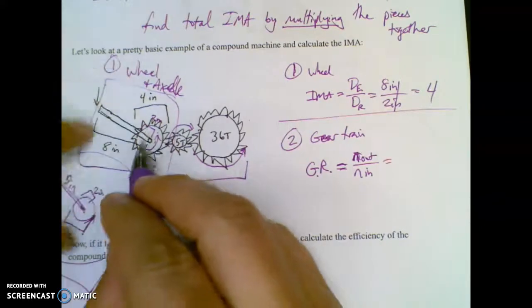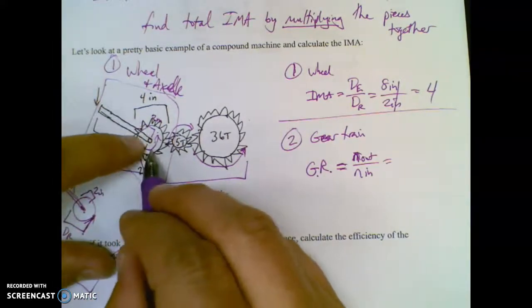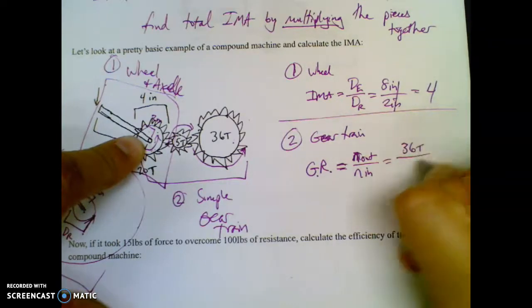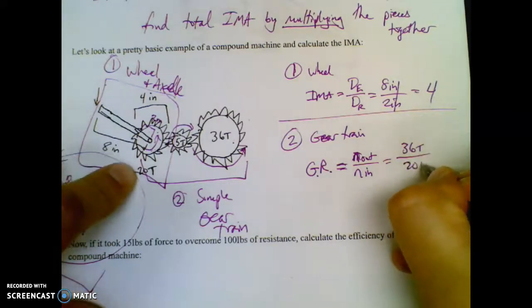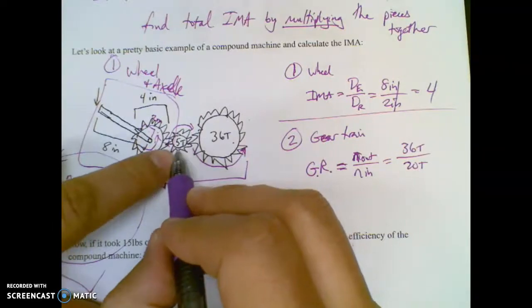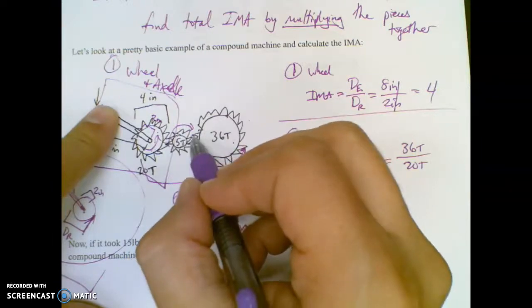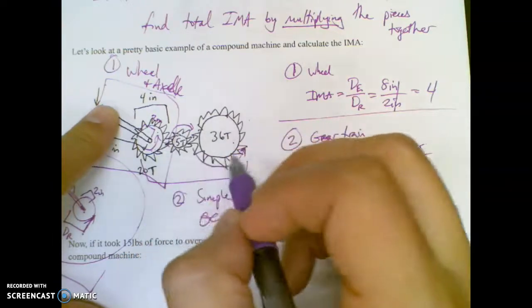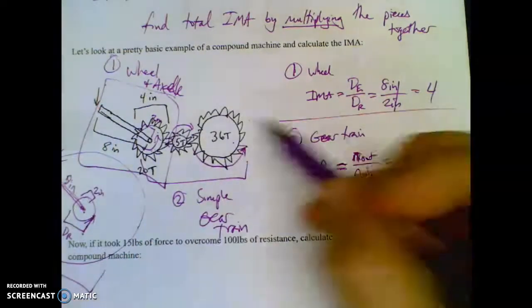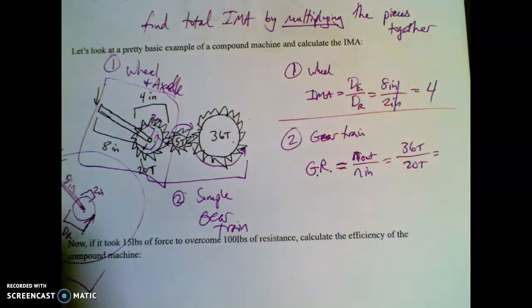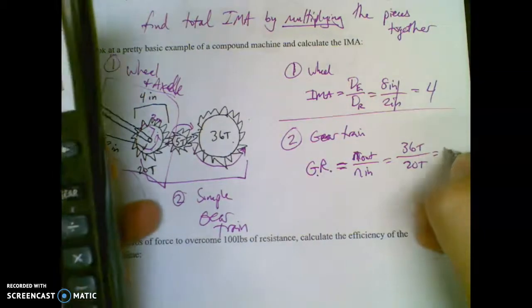So teeth out over teeth in. If this is my one that starts it, there's my input gear and there's my output gear. It's going to be 36 teeth over 20 teeth. That middle gear, it doesn't matter. The five teeth has nothing to do because every tooth that goes here goes there. It's called an idler gear. All it does is space things out and help you keep these turning in the same direction. So you're going to get 36 over 20 and that is 1.8.